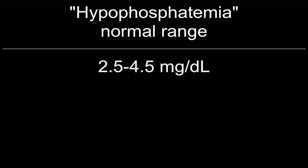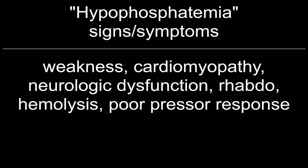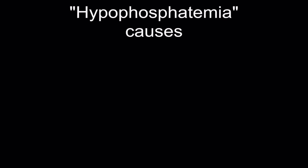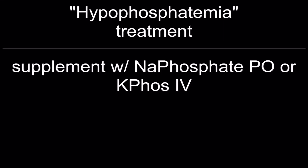Normal phosphate range: 2.5 to 4.5 milligrams per deciliter. Signs and symptoms of hypophosphatemia: weakness, cardiomyopathy, neurological dysfunction, rhabdomyolysis, hemolysis, poor pressor response. Causes: GI losses, inadequate supplementation, medications, sepsis, alcohol abuse, and renal loss. Critical value: less than 1 mg/dL. Treatment: supplement with sodium phosphate by mouth or potassium phosphate IV.